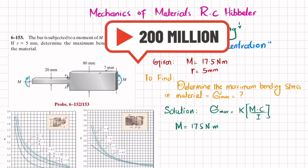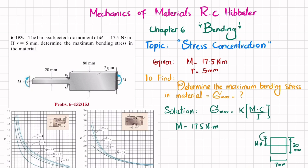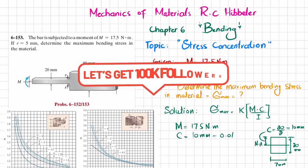Looking at the cross-section where maximum stresses occur, the height is 20 millimeter and the thickness is 7 millimeter. Taking half of the height, the neutral axis is at the center. C is the distance from the neutral axis to the outermost layer, so C equals 20 divided by 2, which is 10 millimeter, or 0.01 meter.